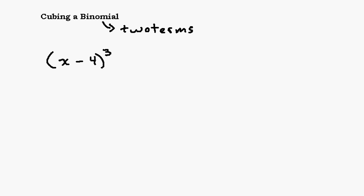What you want to be careful of—the biggest mistake people make here is they do this. I'm going to say not equal to. They do x to the third minus 4 to the third, sort of like distributing this 3 and taking each thing in the parentheses to the third power.